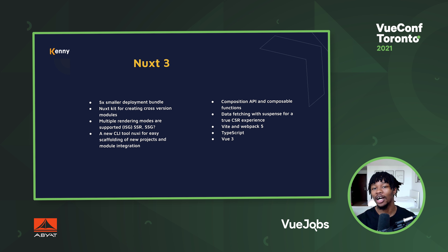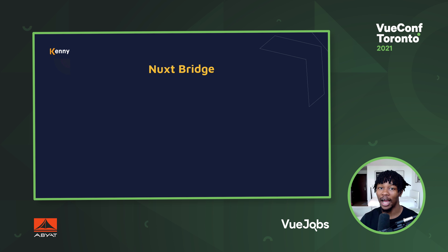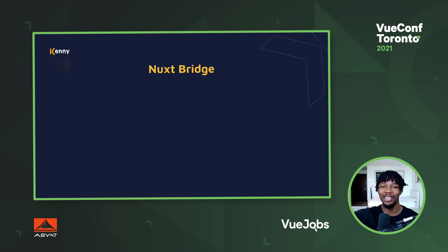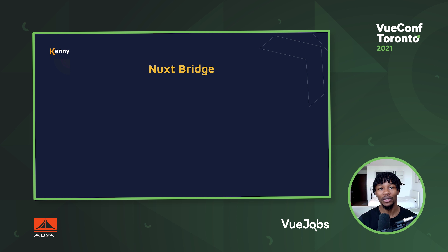But if I'm a Nuxt developer who's been building with Nuxt 2 and I'm seeing all the amazing things that Nuxt 3 offers, I'm starting to get worried a little bit. How do I get all of these awesome new things into my Nuxt 2 application? I want it to be smaller. I want it to be faster. I want to get access to Vue 3 and all of those things. That's how I felt until I heard about the Nuxt Bridge.